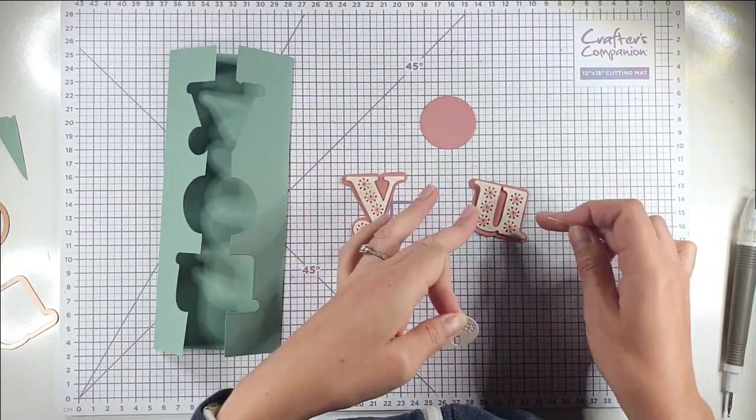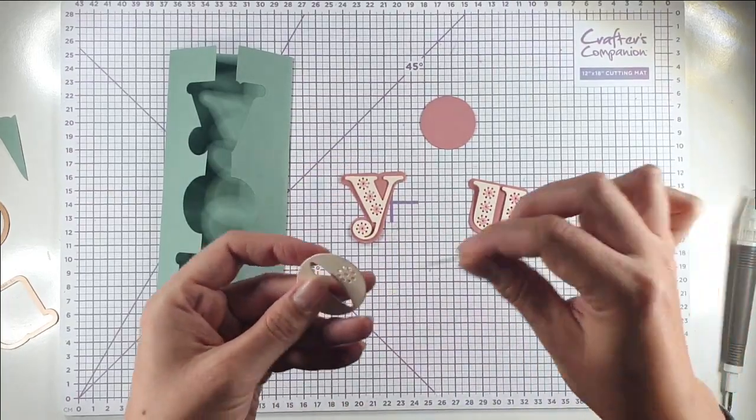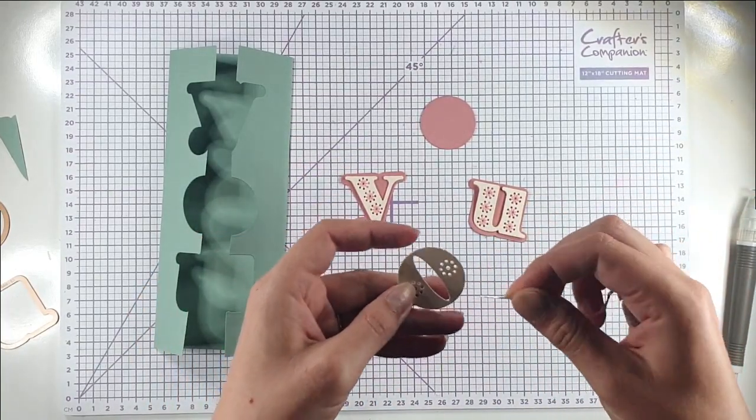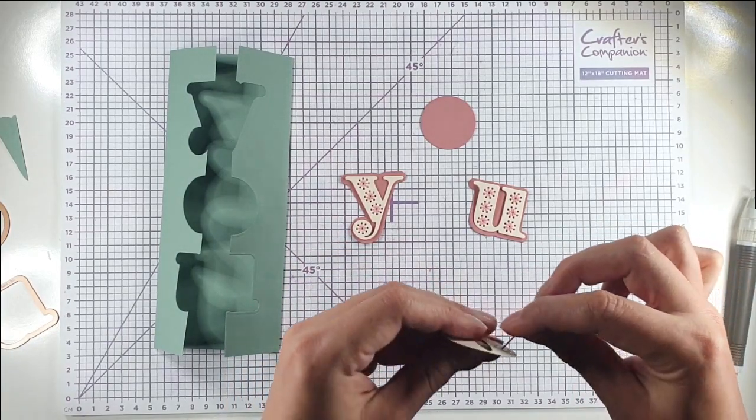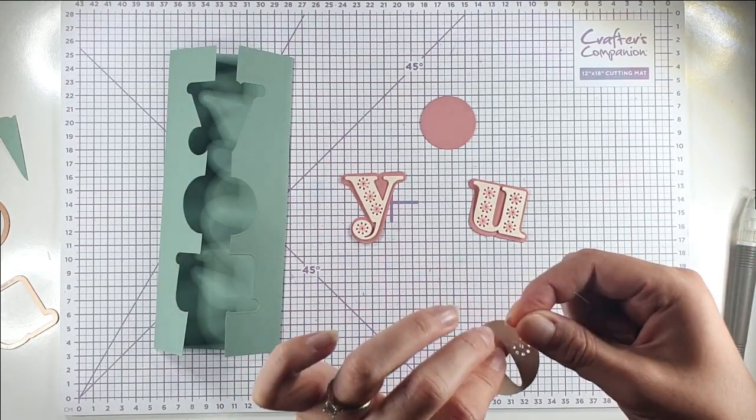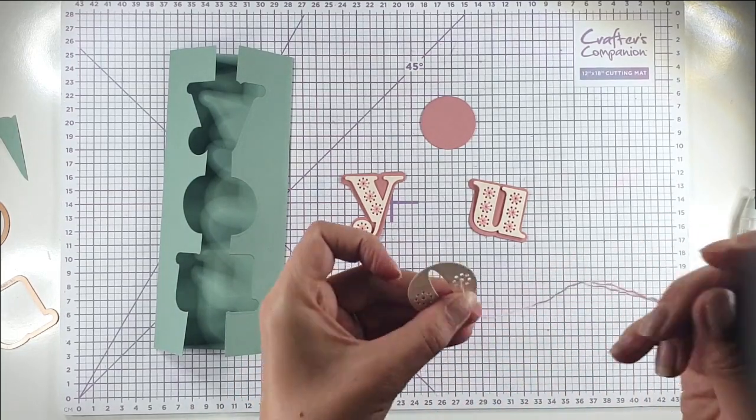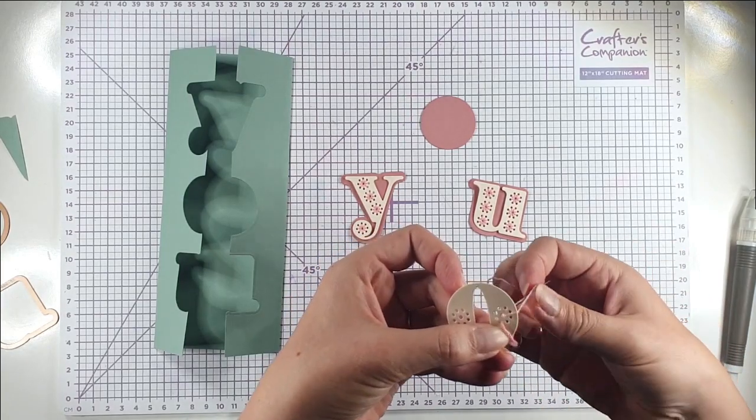So you could do all sorts of things with this stitching. I've seen people do crochet styles or little roses, things like that, but I'm going to keep it super simple today. All I'm going to do is go up through this middle hole, catch this behind, and then go through one of the outside holes.